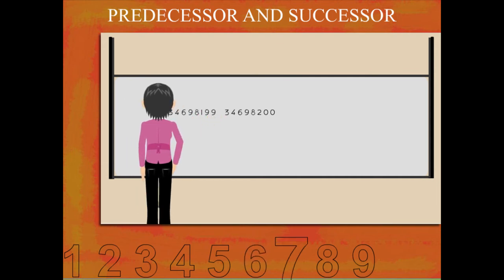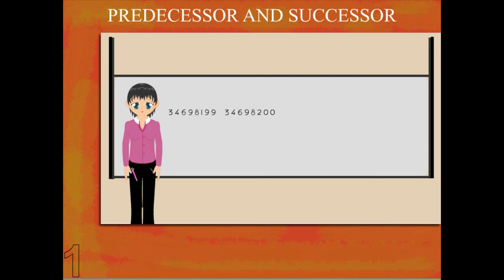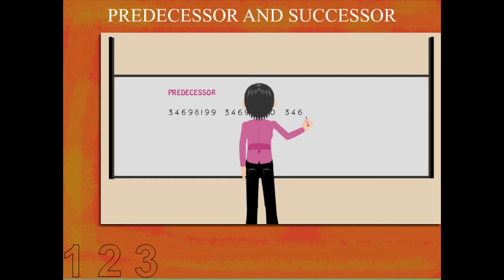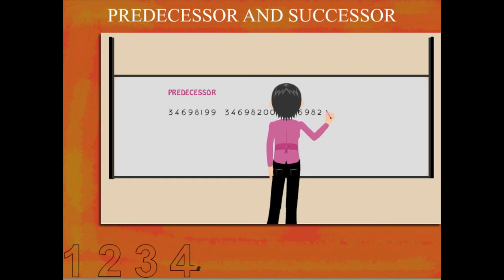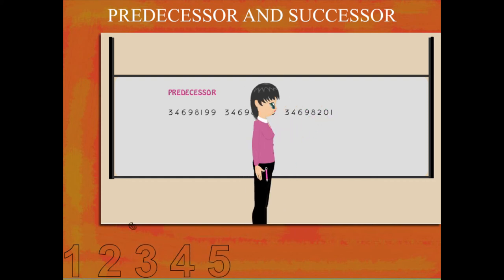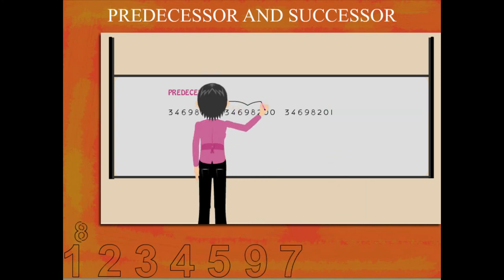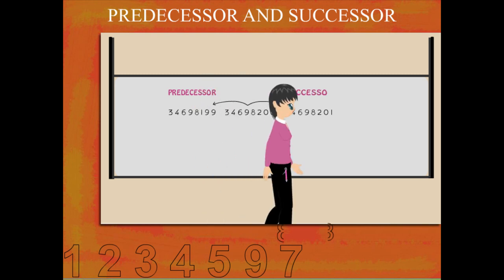This number is one less, so it is called the predecessor. She then writes another number to the right, which is one more than the number in the center. This is called the successor.